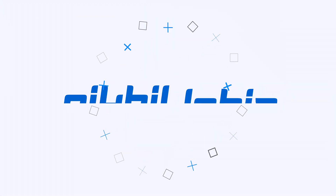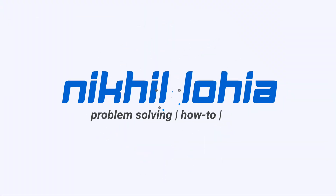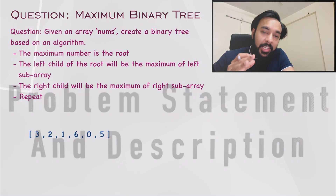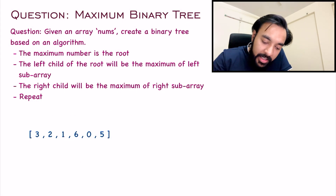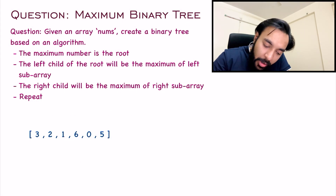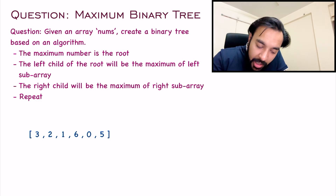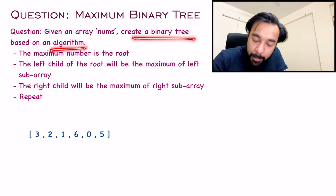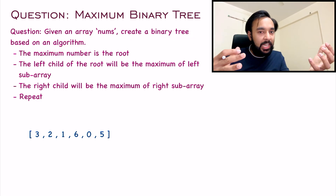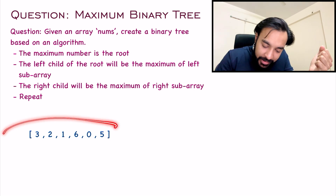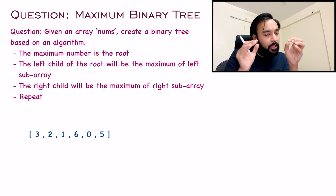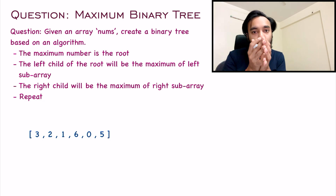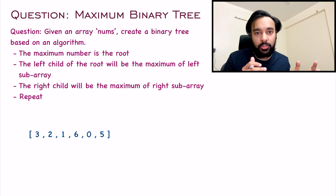Let's get started. First, let's make sure we understand the problem statement correctly. In this problem you are given an array nums and you have to create a binary tree based on a certain algorithm. In the sample test case you can see an array, and using certain rules you have to create a binary tree. So what are those rules?